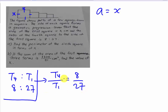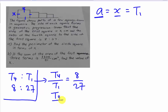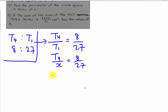I have a little bit of information about the first term, because the question tells me the side is x. So I'm going to substitute x into the first term here. So t4 over x will equal to 8 over 27. From here, if we solve this, actually we can know the side of t4 — it's 8 over 27x.